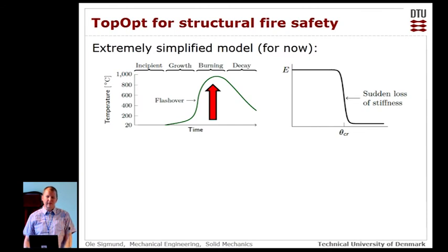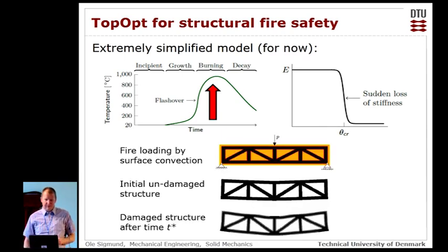And so our simplified model will just assume that we have reached this burning stage where our structure that we are optimizing is totally engulfed in fire. And so essentially you can just model the boundary conditions as a convection boundary condition. The other extreme simplification we are doing is that we have a material law looking like this. So initially when there's no fire, we have a certain stiffness of our material, but then when the temperature reaches a certain stage, then there's a sudden drop in the stiffness indicating you could see it as wood. When it has reached a certain temperature, it's only char, and it has no stiffness anymore. So that's also a very simplified model.